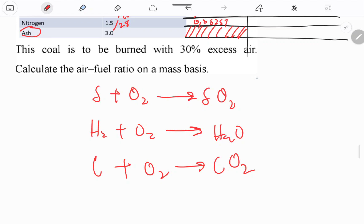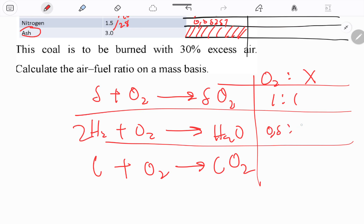I'm making combustion equations piece by piece. This is a ratio of oxygen to some x. Here it's 1:1, here I have to put 2 so it becomes 0.5:1, and here it's 1:1.